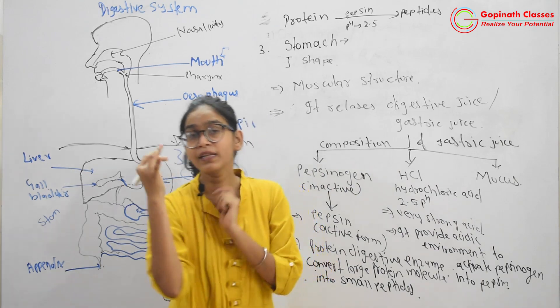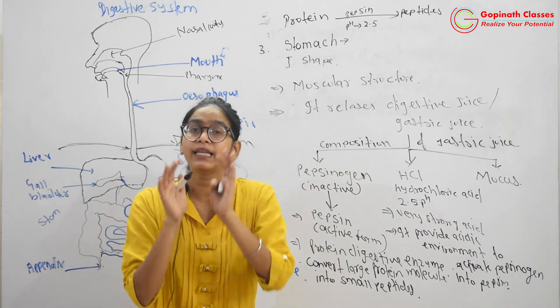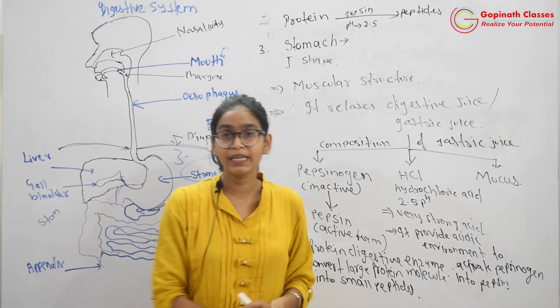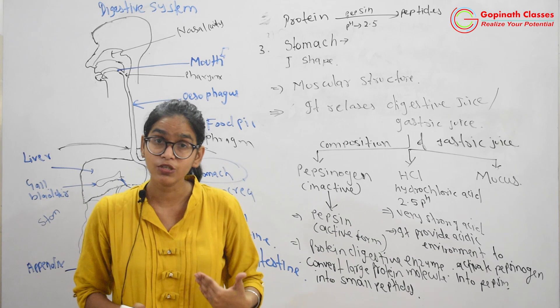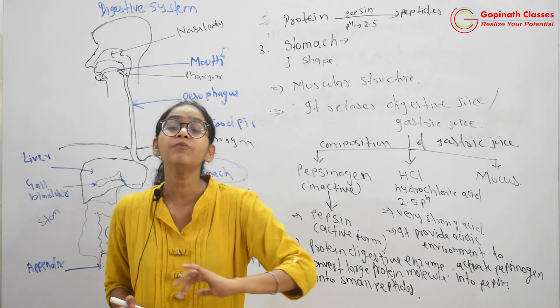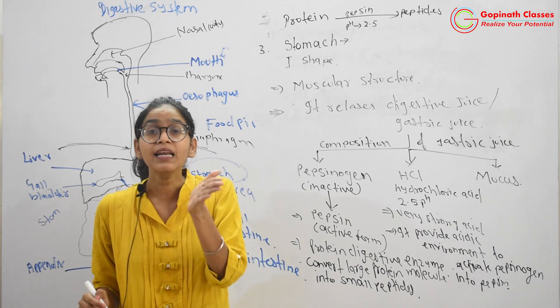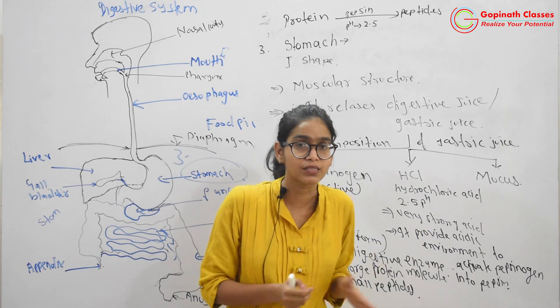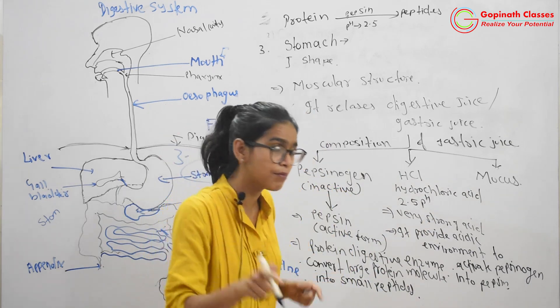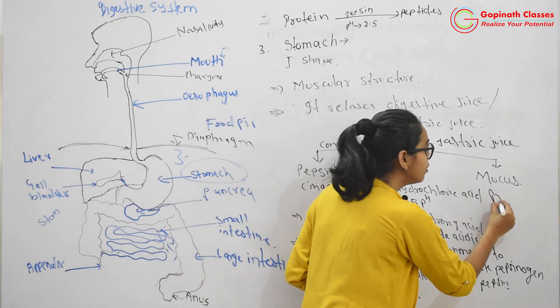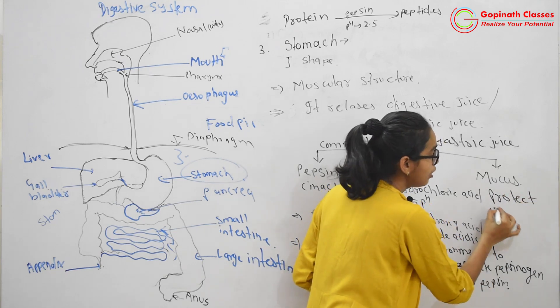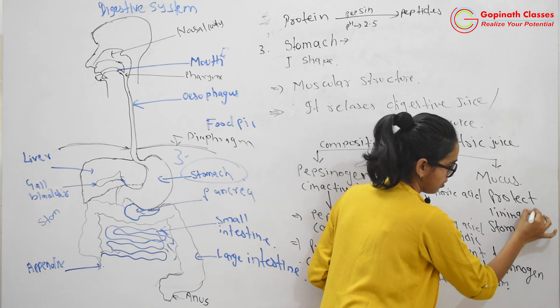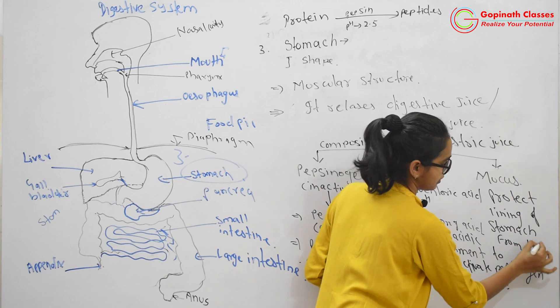Now, the acid is very strong, and our stomach's lining is very delicate. So definitely if HCL is present there for a long time, our stomach lining will also be destroyed, damaged. So to prevent this, our body takes protective measures. The inner layer of stomach releases a sticky substance called mucus. It is released by the inner layer of stomach. Its function is to protect lining of stomach from HCL.